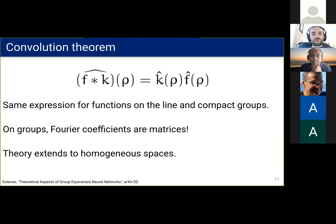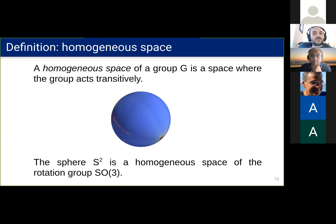We also need Fourier transforms and convolutions on homogeneous spaces. A homogeneous space is a space where the group acts transitively. This means that for any two points in the space, there is a group action that moves one to the other. Homogeneous spaces are the natural domain of features of a group equivariant neural network. For example, the sphere is a homogeneous space of the rotation group SO(3).